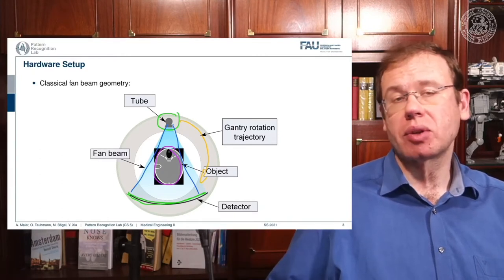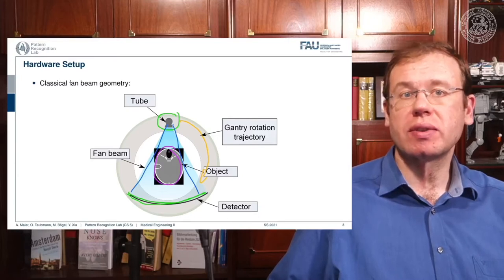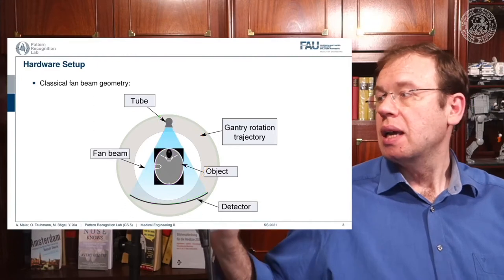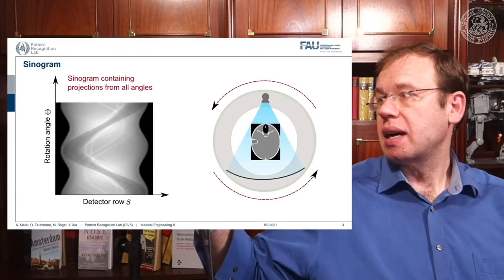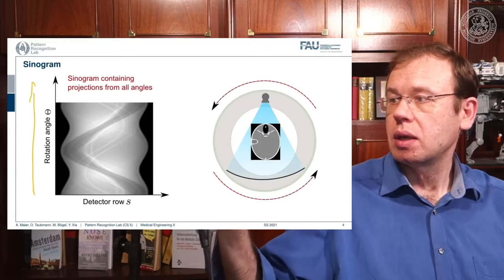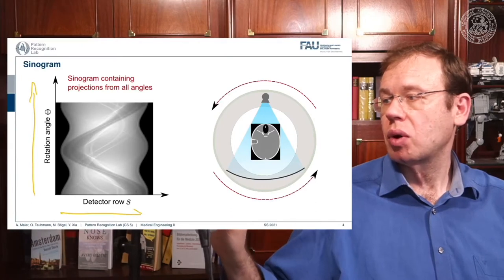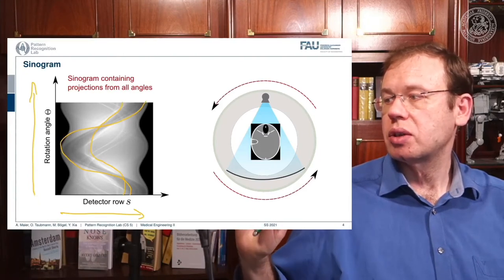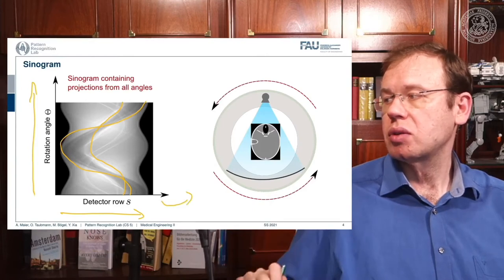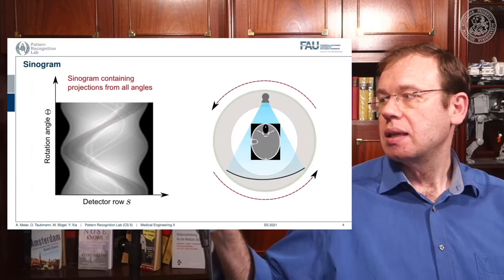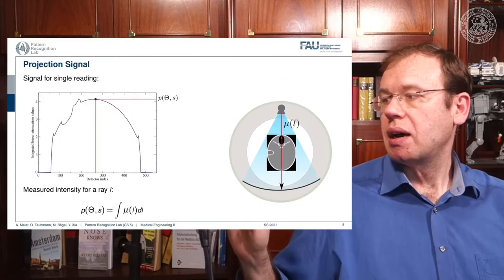We rotate by at least 180 degrees plus the fan angle, and if you want to be sure, you go toward 360 degrees — then you have measured all of the relevant rays. Doing this, we get a sinogram, where we have the rotation angle and the detector row, and the objects in the field of view get projected onto sinusoid-like structures, from which we then reconstruct the actual image.